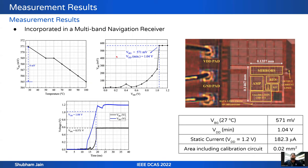Measurement results of the chip are shown. This BGR circuit is incorporated in a multi-band navigation receiver used for decoding and digitizing satellite receiver signals. The chip was heated using a solder gun and the output voltage VBG was measured; the chip could not be cooled due to lack of equipment, so only half the temperature curve was obtained. The minimum VDD in measured results is 1.04 V, with an output voltage of 571 mV. The circuit consumes 182.3 μA of static current at 1.2 V VDD, and the area including the calibration circuit is 0.2 mm².